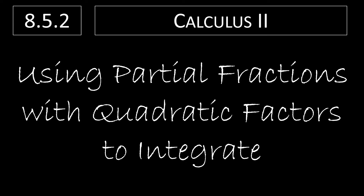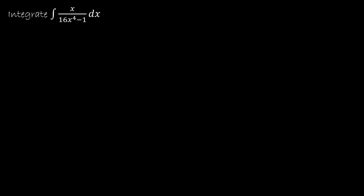Let's take a look at a partial fraction question where we have a quadratic factor. Up to this point we've dealt only with linear factors, and when we had a linear factor like x minus 1 we used A in the numerator, which is a constant — degree 1 denominator, degree 0 numerator. If we end up with a quadratic factor like x squared plus 1, which cannot be factored into two degree-1 factors, then the numerator has to be degree 1, so we put ax plus b in the numerator. Let's see how that affects our question.